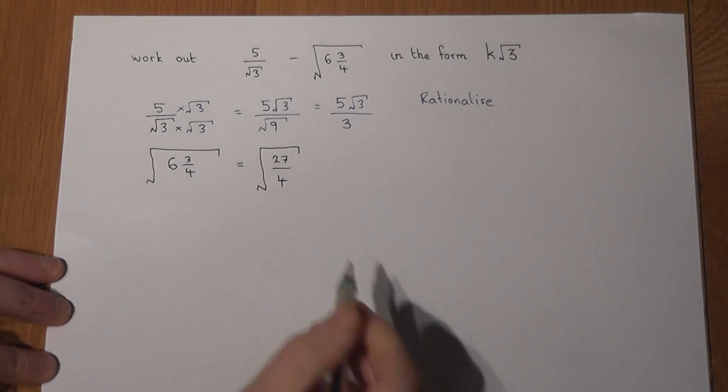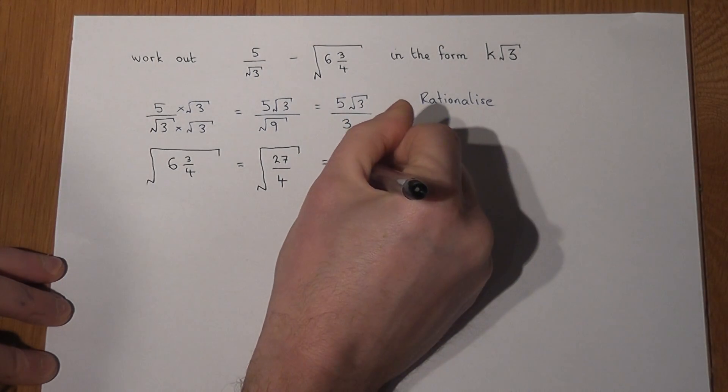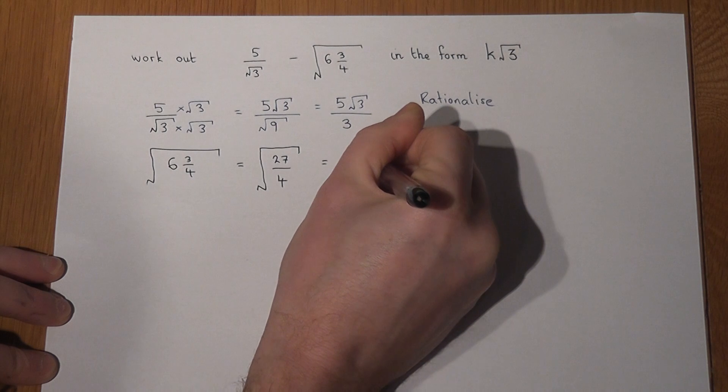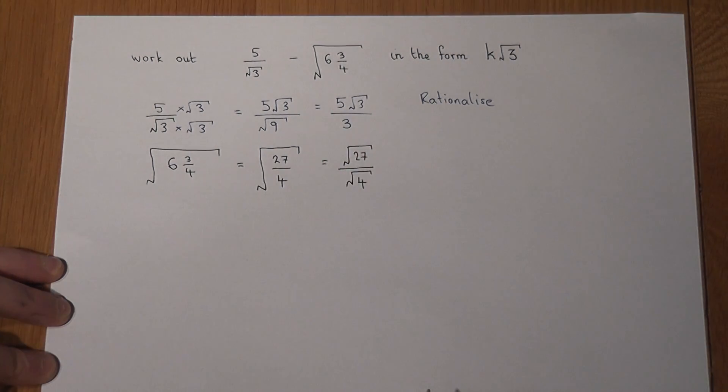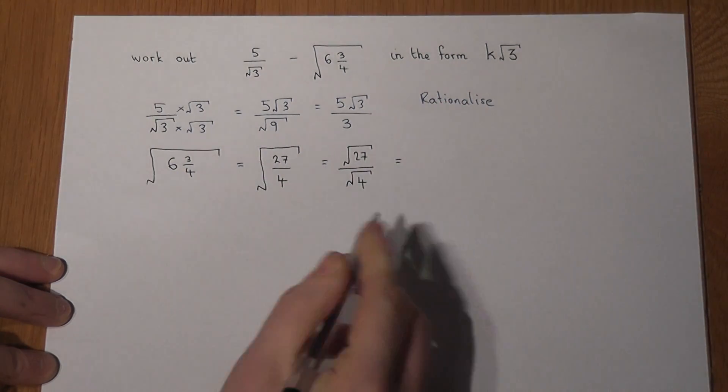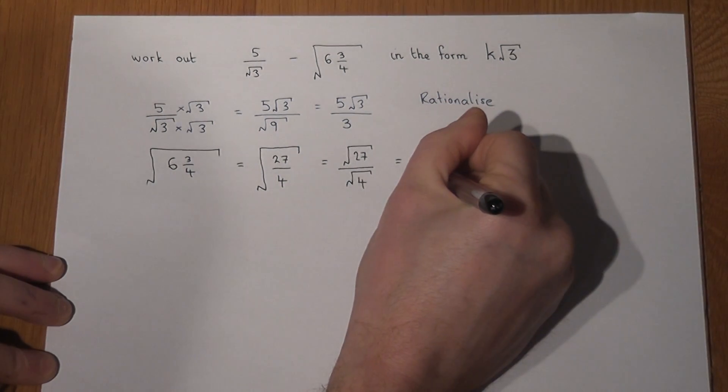And when you've got a square root of a fraction all we do is we try to square root the top and the bottom separately. Now I can find out what the square root of 4 is, it just equals 2. But the top is root of 27.